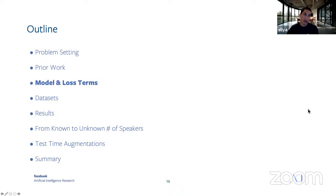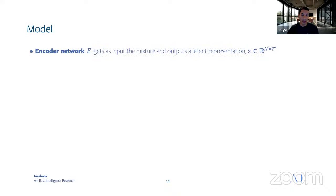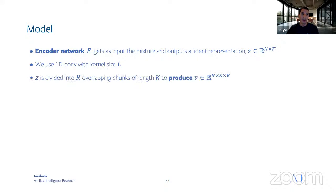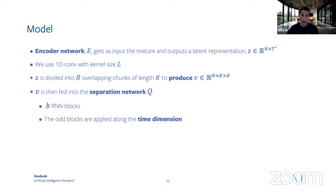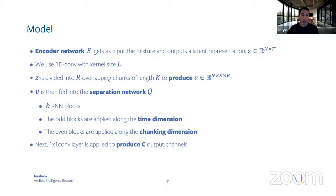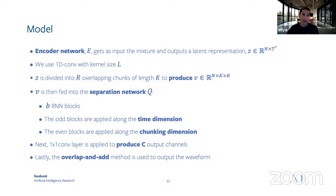Our model starts with an encoder network E, which takes the mixture as input and outputs a latent representation Z. The encoder is a 1D convolutional layer with kernel size L. The signal is divided into overlapping chunks of length S, called V. We then feed this V tensor into the separation network Q. Q has V blocks of RNNs — odd blocks applied along the time dimension and even blocks along the chunking dimension. After that, 1×1 convolutional layers produce C output channels, and we apply the overlap-and-add method to output the waveform.